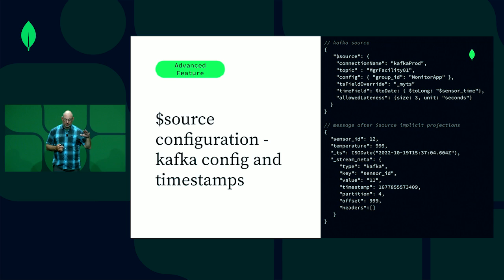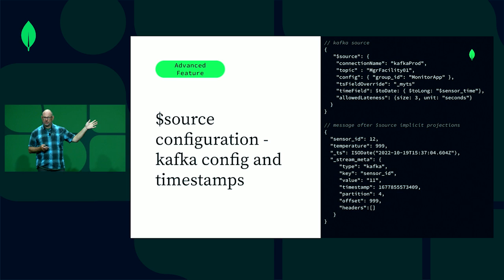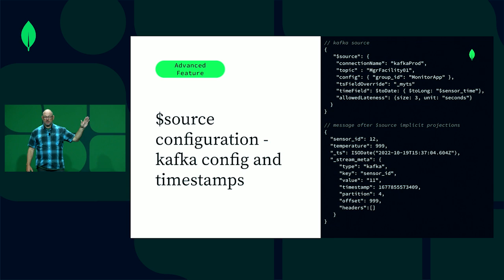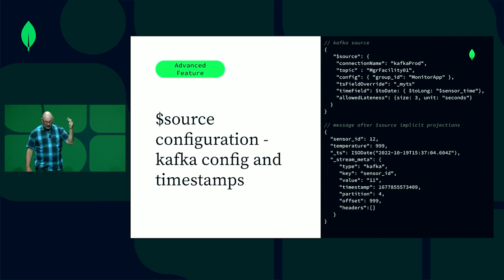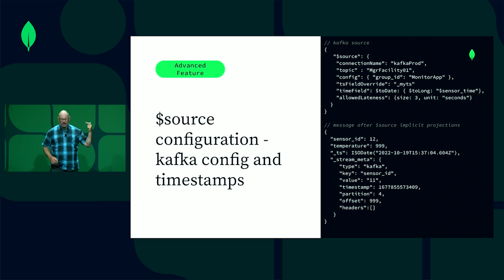Look at this example document. We have the timestamp, now a BSON date type — underscore TS is essentially the primary key for an event. Then we have underscore stream meta. We pull in all the header information from Kafka: the Kafka header info, the key that was used, the timestamp that Kafka ingested it, the partition count offset, and any other header information. That is now available in your document for processing. Maybe you're routing data conditionally based on this, or you want to know what topic it was in to process it differently. Additional metadata from Kafka — first-class Kafka client.